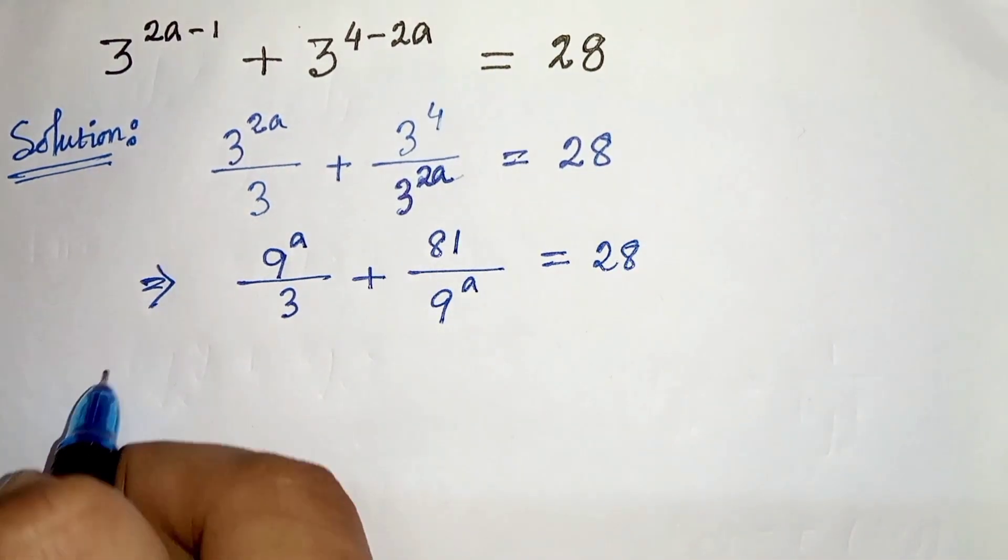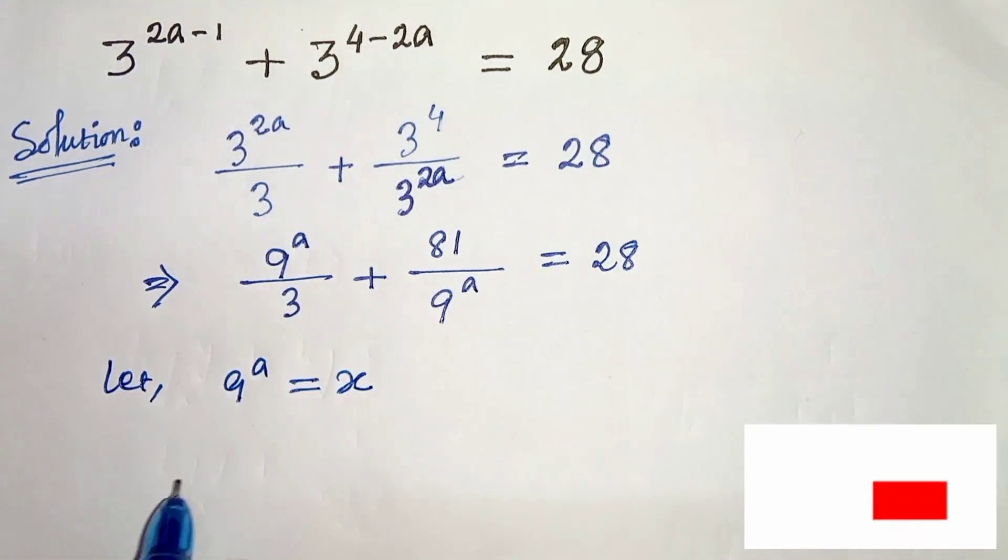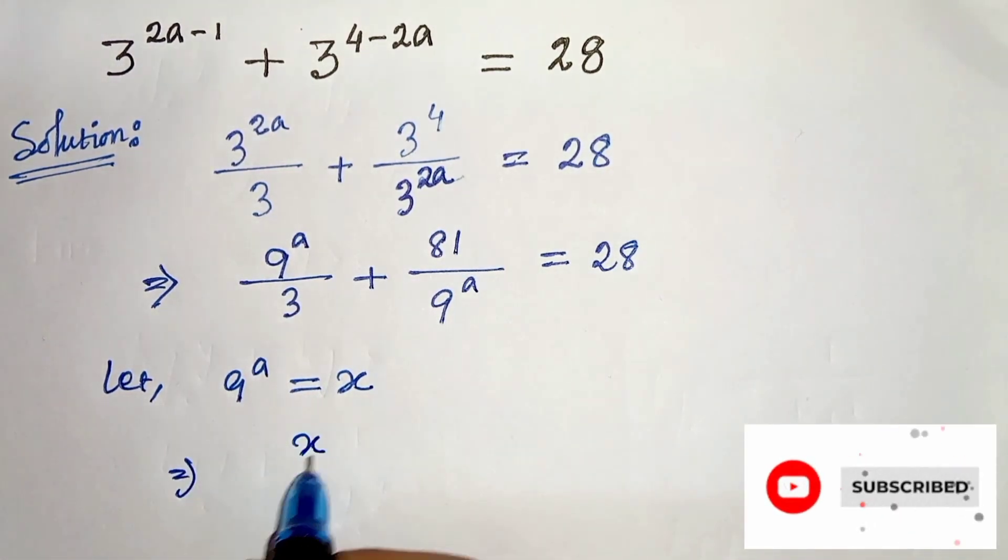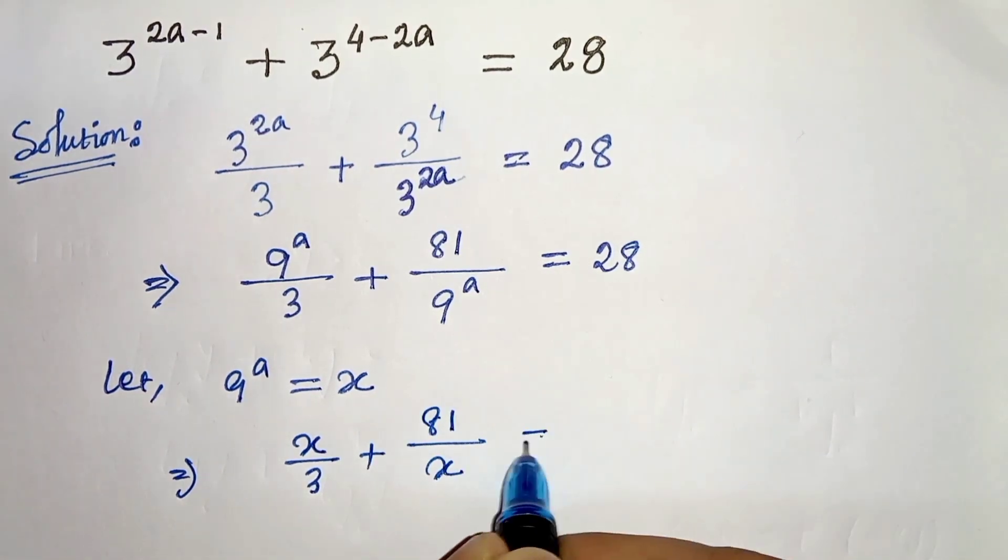Now let us consider 9 to the power a as x, 9 to the power a equals x. Now we can write the equation as x by 3 plus 81 by x equals 28.